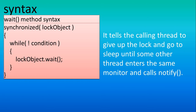Now we will see the syntax one by one. If you are using the wait method, you have to use a synchronized method in the program with a lock object — the thread object, created using the new keyword. Inside the synchronized method, you specify the condition and then use the wait method. When the condition is met, the thread stops execution, gives up the lock, and goes to sleep until another thread enters the same monitor and calls notify.